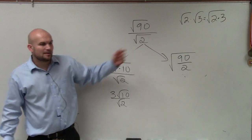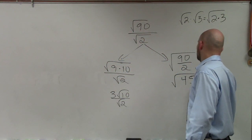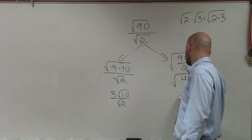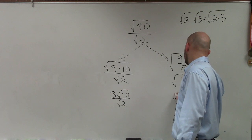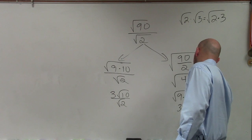So 90 divided by 2 is 45, which then that goes to 9 times 5, which is 3 square root of 5.